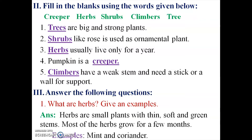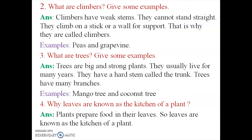Third section: Answer the following questions. First question — What are herbs? Give examples. Answer: Herbs are small plants with thin, soft and green stems. Most of the herbs grow for a few months. Examples: mint and coriander. Spell coriander: C-O-R-I-A-N-D-E-R.